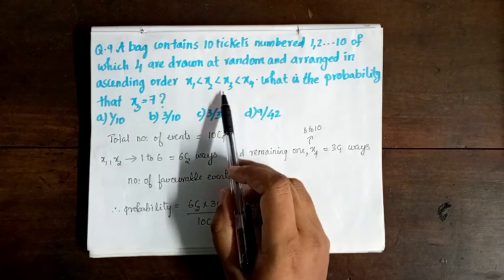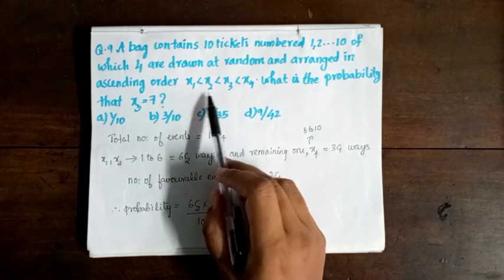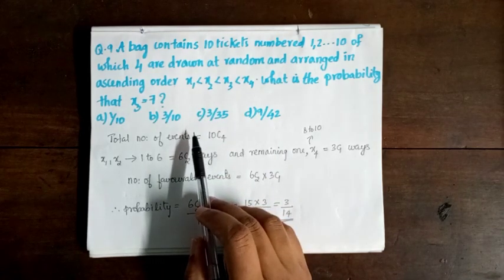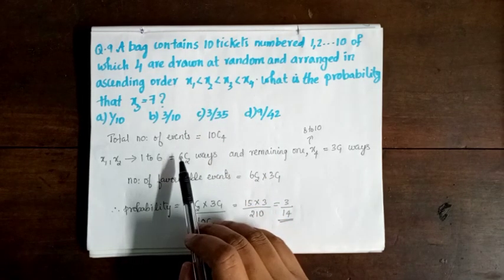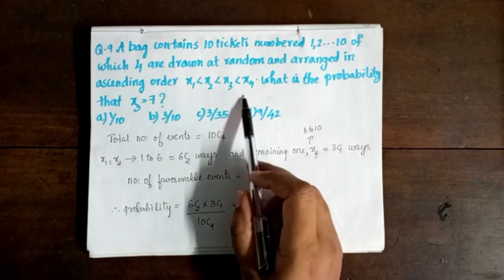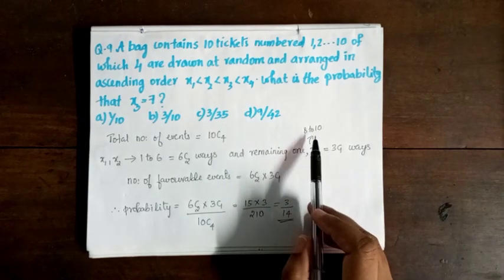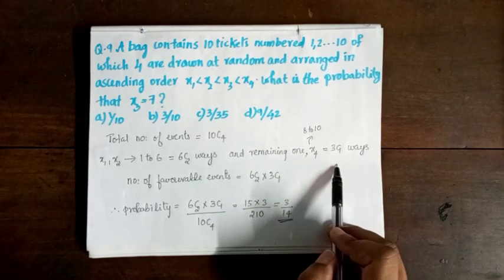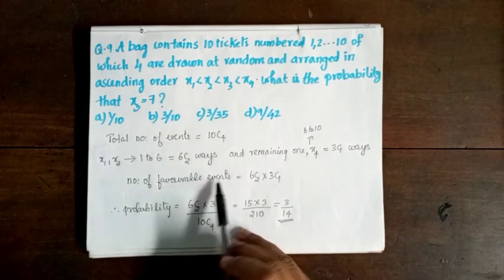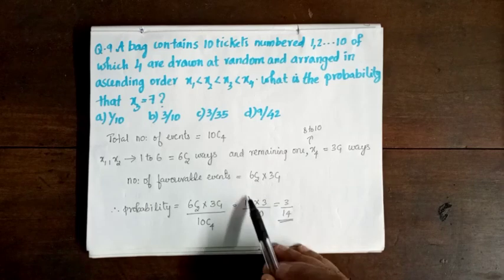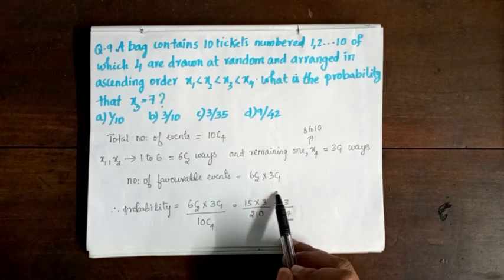Since x3 = 7 is fixed, x1 and x2 must be chosen from numbers less than 7, i.e., from {1,...,6}, giving 6C2 ways. x4 must be chosen from numbers greater than 7, i.e., from {8,9,10}, giving 3C1 ways. So the number of favorable events is 6C2 × 3C1.